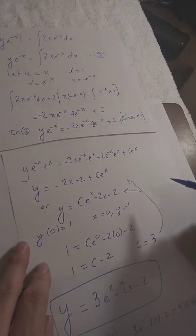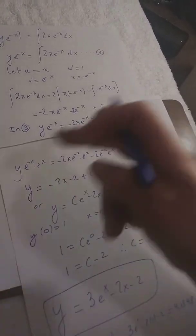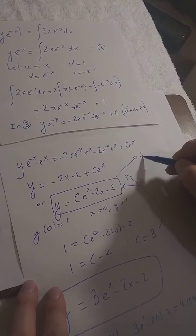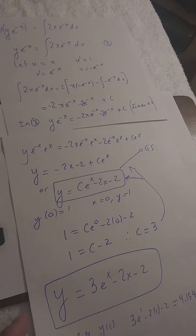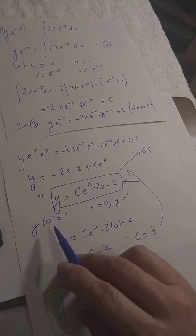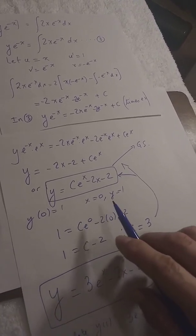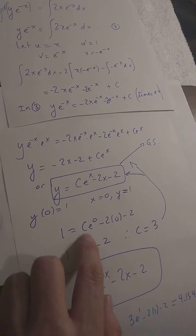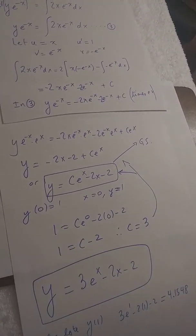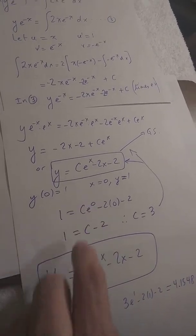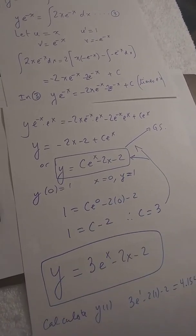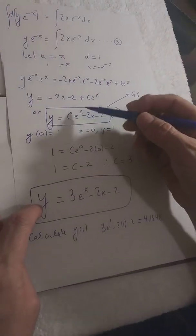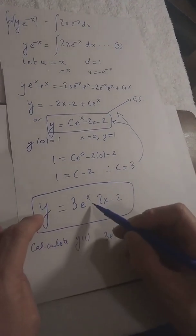So we have y·e^(−x) equals the right-side integral. Multiply both sides by e^x to cancel all the e^(−x) terms, and you end up with y equals −2x − 2 + c·e^x. This is the general solution. For the particular solution, y of 0 is 1: substitute x=0 and y=1, giving 1 equals c·e^0 − 0 − 2, so c equals 3. The particular solution is y equals 3e^x − 2x − 2.